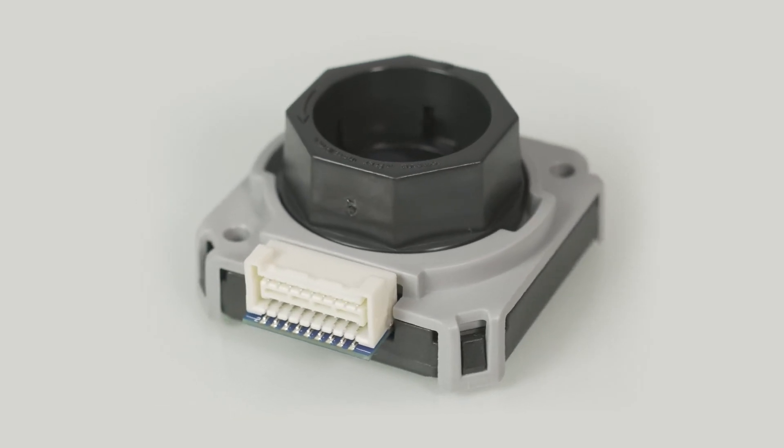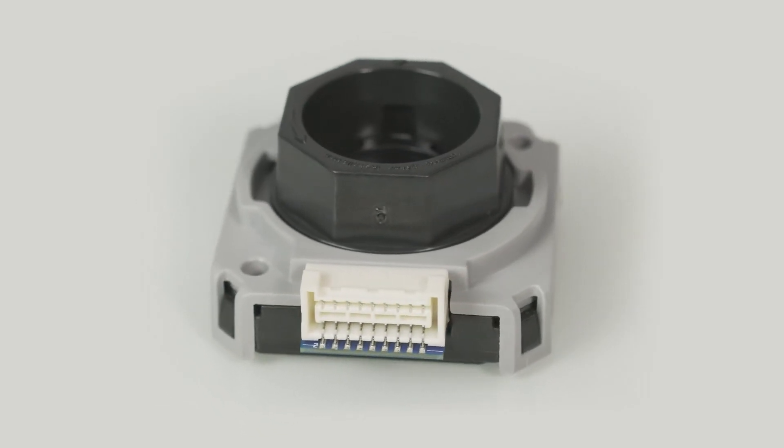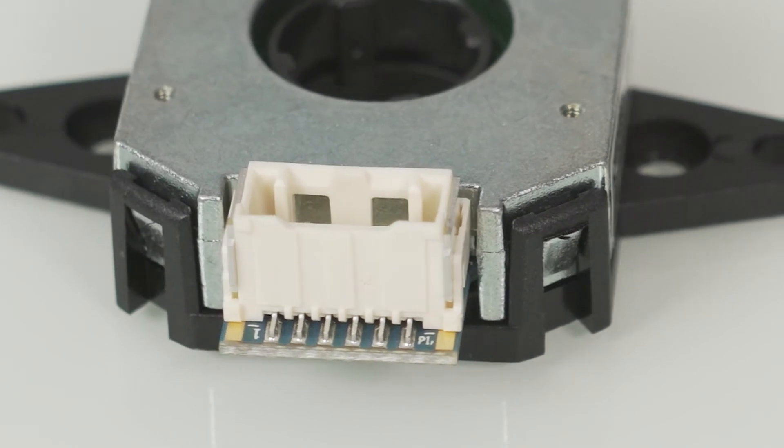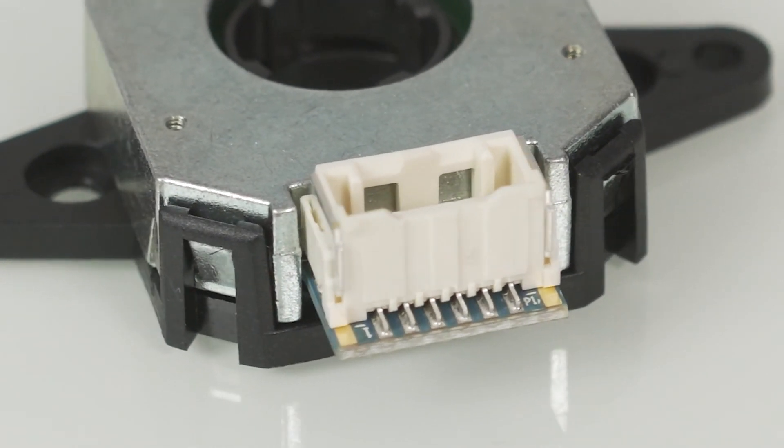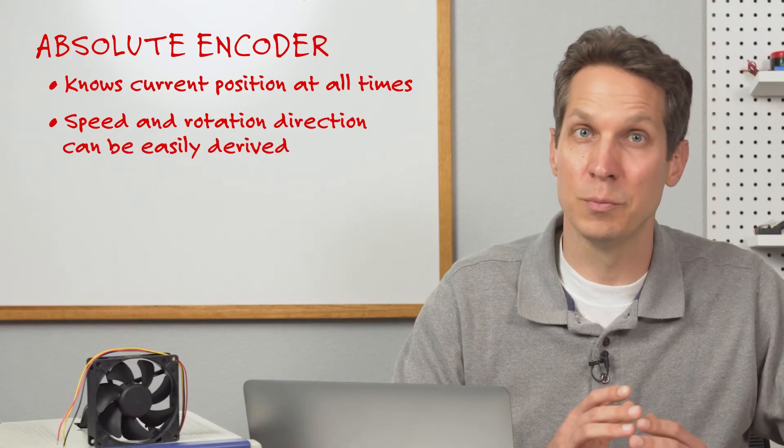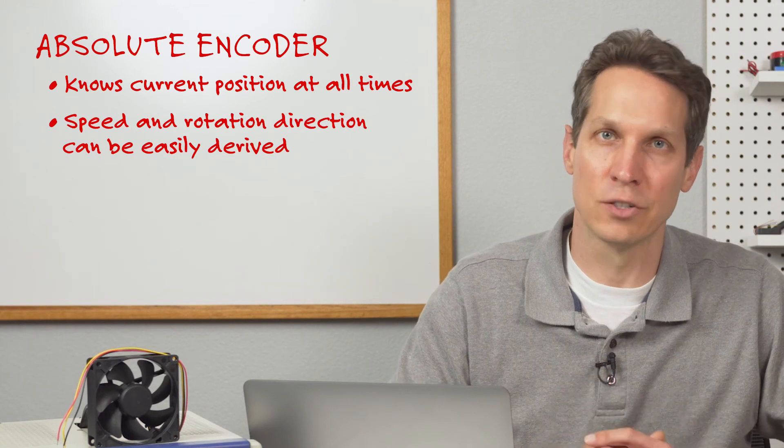Instead of simply counting how far you're moving in one direction or the other, like with an incremental encoder, the absolute encoder knows its current position at all times. From this, speed and rotation direction can be easily derived.